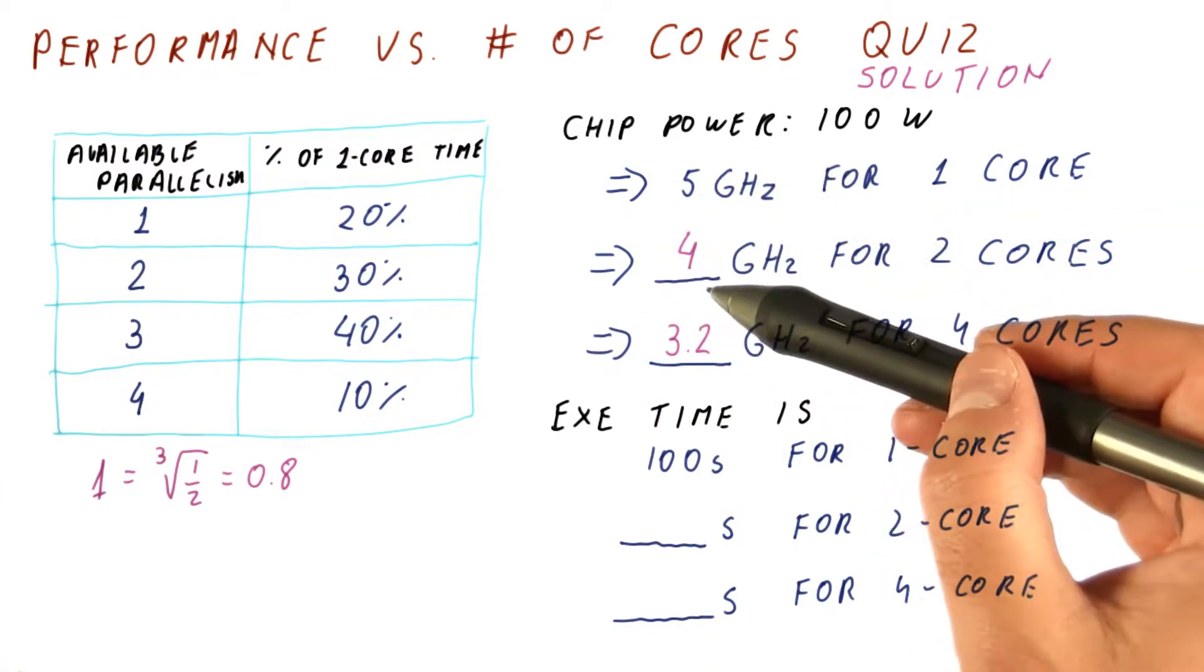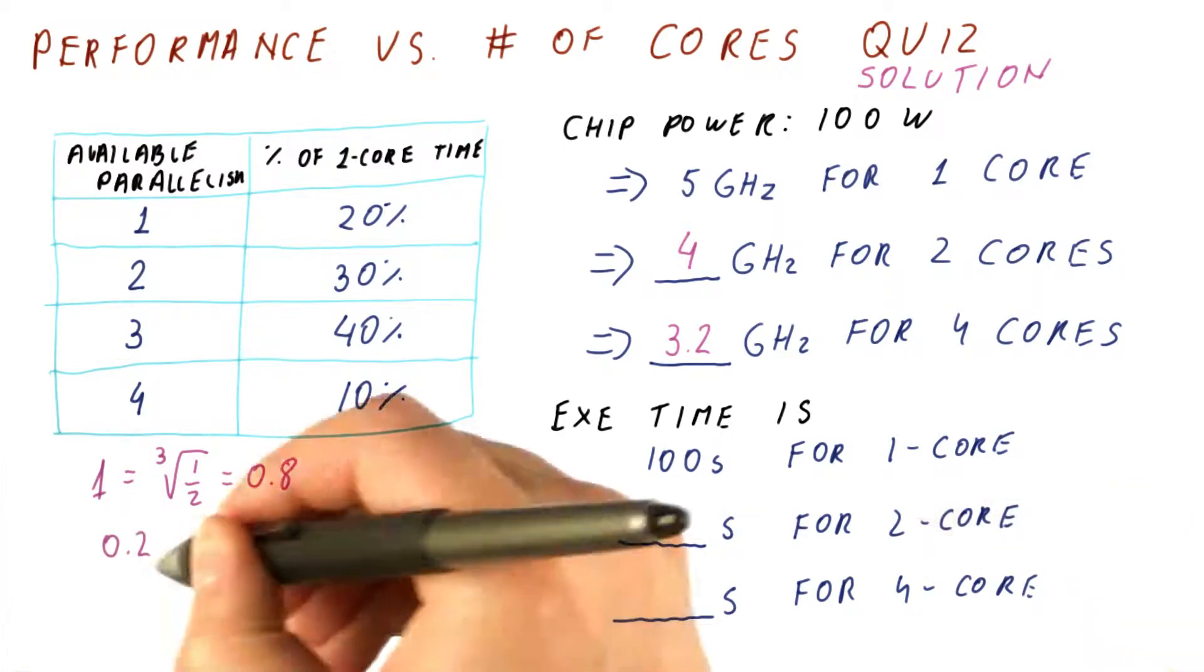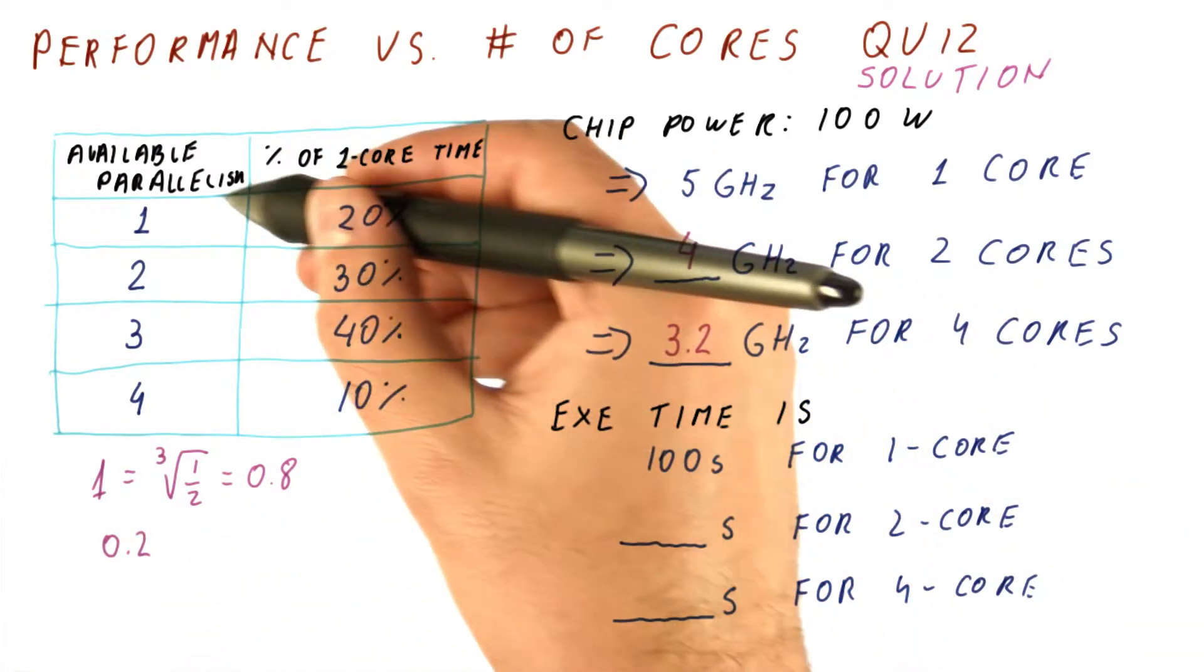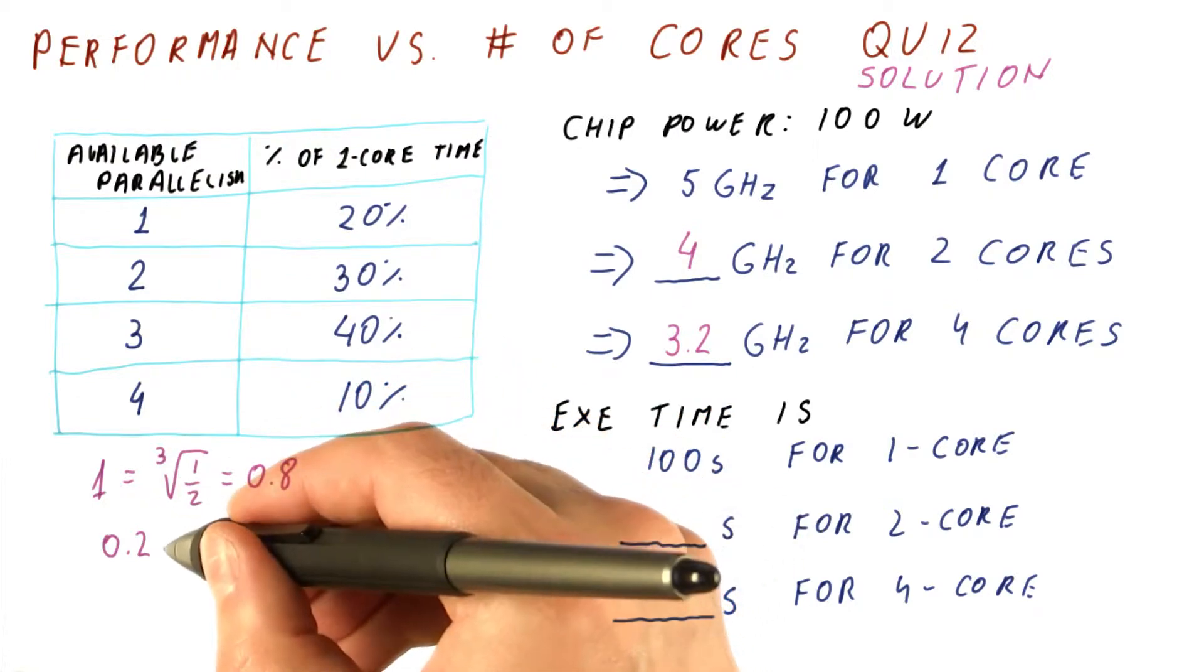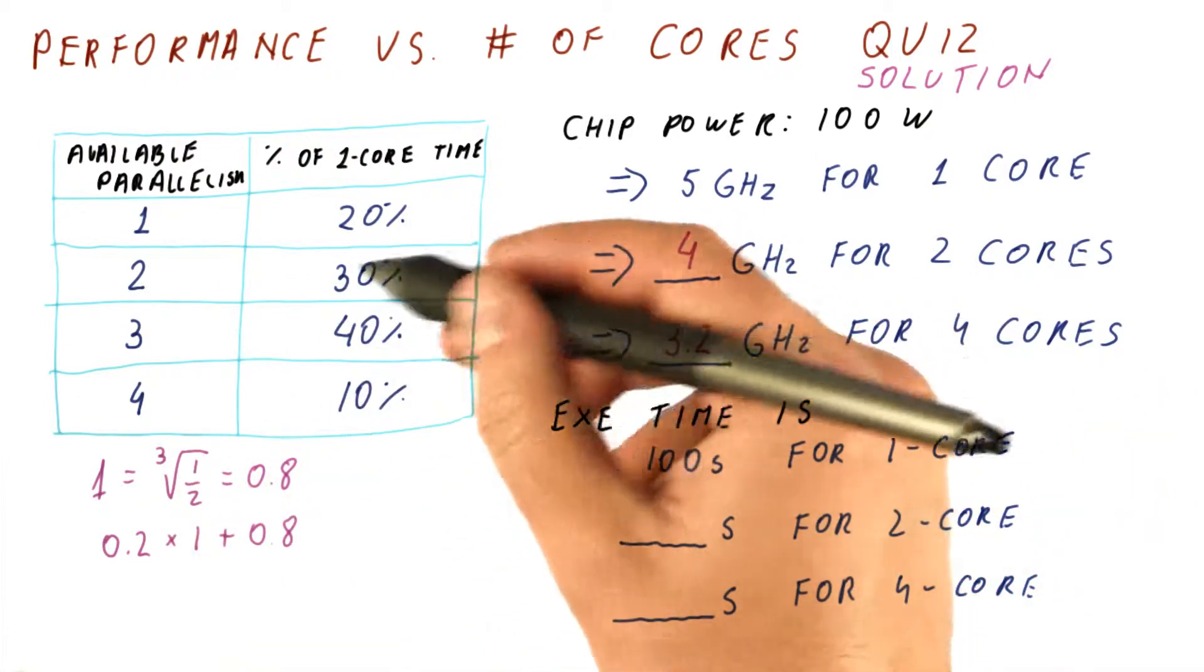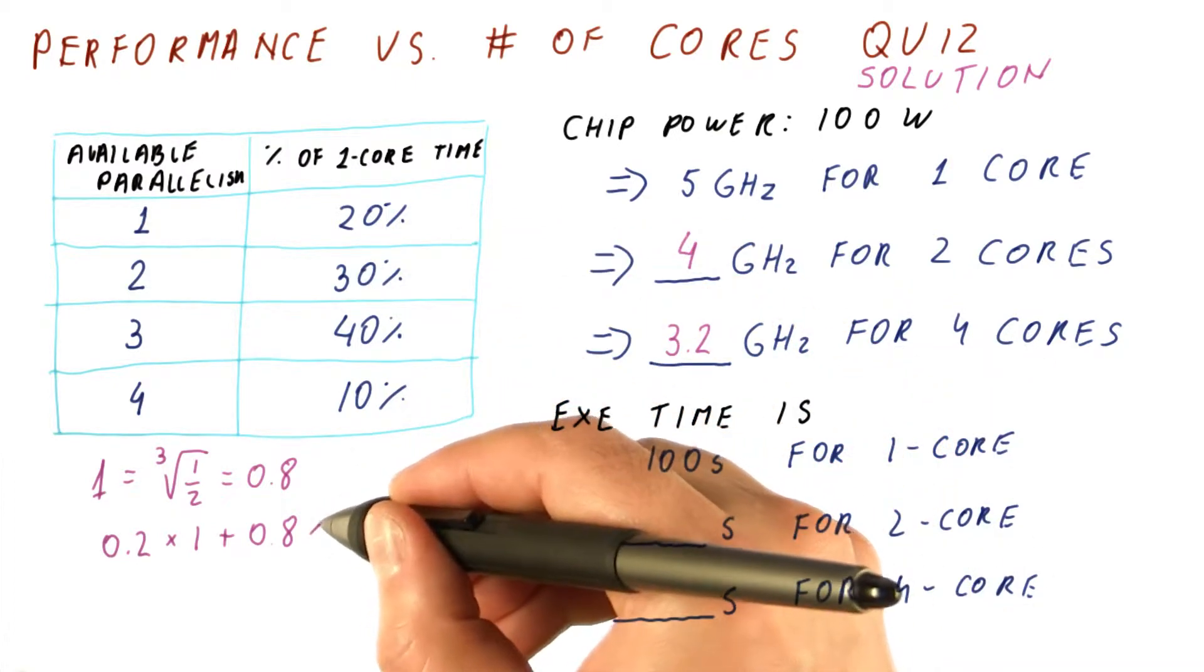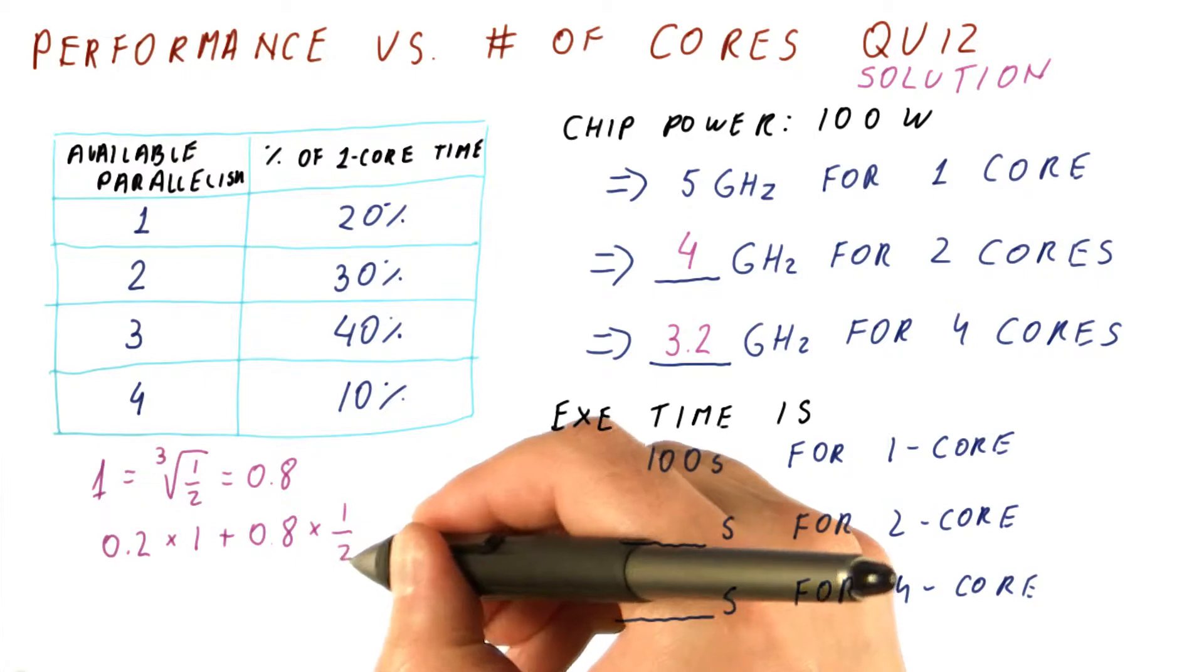If we ignore the frequency and have a two core chip, then what we get is that for 20% of the time, we get a parallelism of only one. With two cores for the remaining 80% of the execution time, we now have a speedup of two. So that time is cut in half.